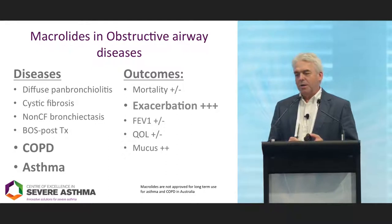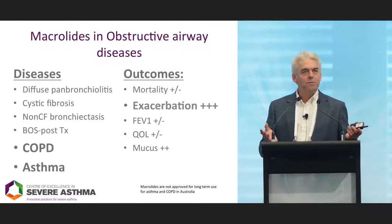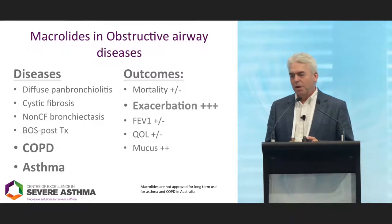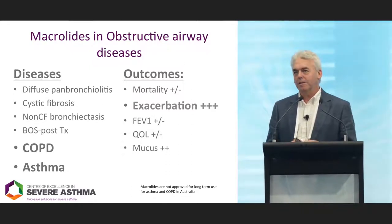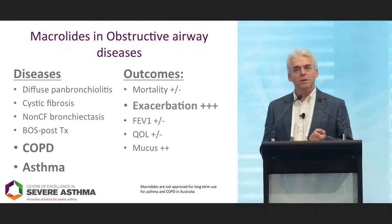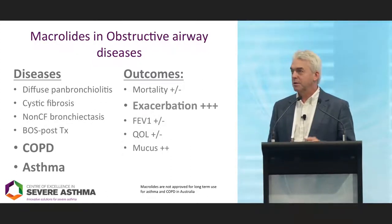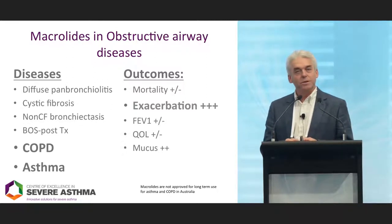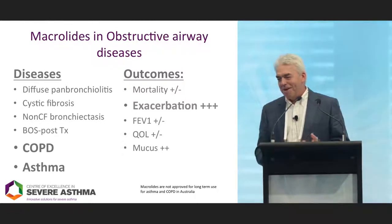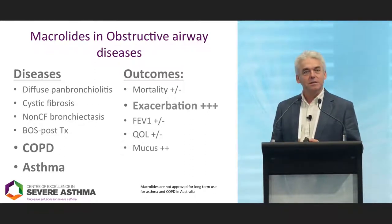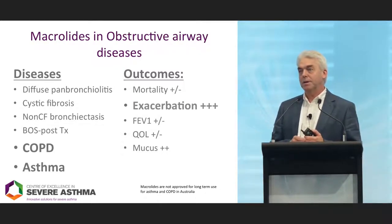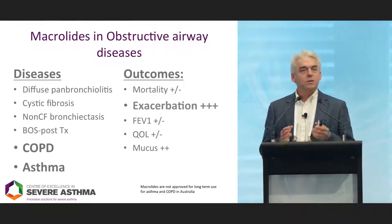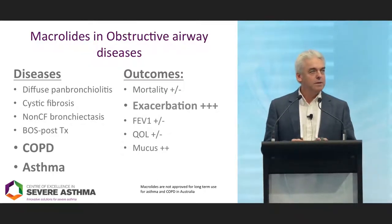Macrolides are widely used in quite different forms of obstructive lung diseases. Here I've listed who they work in and what benefits they give. You can see diffuse panbronchiolitis, recognised commonly in Asia but does occur in Australia, cystic fibrosis and non-CF bronchiectasis — they have an established place in these conditions. The question now is, are they going to be useful in asthma and COPD? There's a little reticence about a positive answer because of concern about antibiotic resistance.